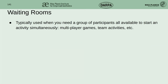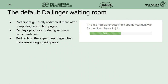The basic scenario for when you'd use a waiting room is where you need a fixed number of people for an activity to make sense at all — like it's a game for ten people — and no one can start until you've got ten people ready, and then you want them to all start simultaneously.